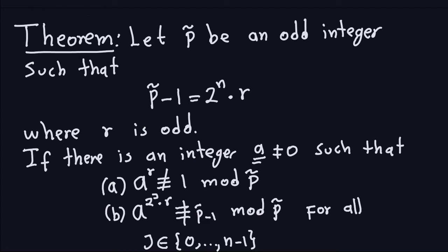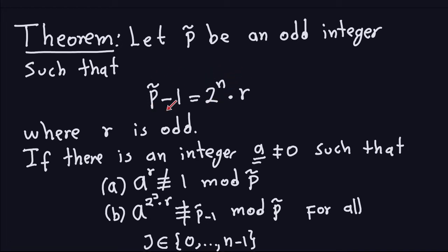Because P-hat is odd, P-hat minus 1 is even. What we do is take P-hat minus 1 and factor out the largest power of 2 that goes into it. That's why the remaining factor has to be an odd integer — if it were even, we could factor out another power of 2. So for every even number you can always factor out the largest power of 2 that divides it, leaving another odd number.